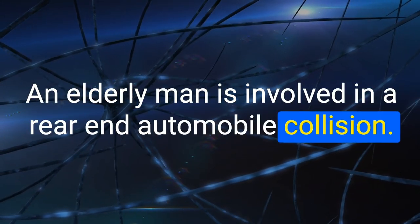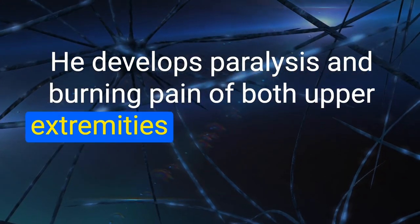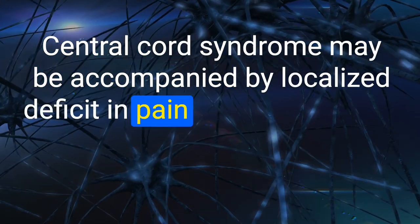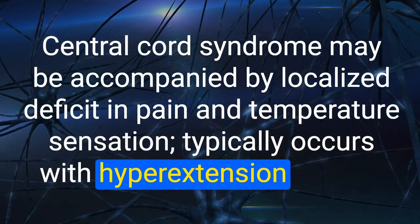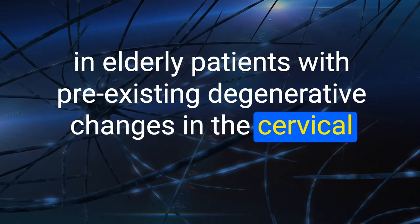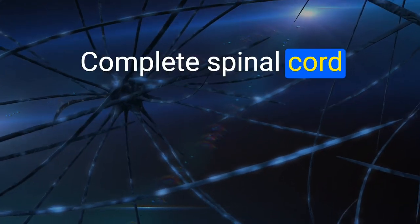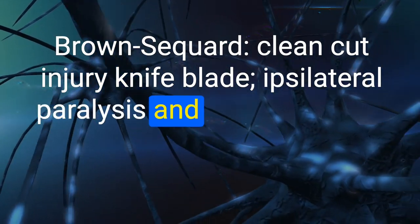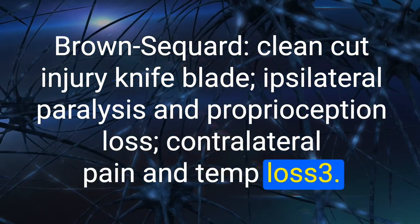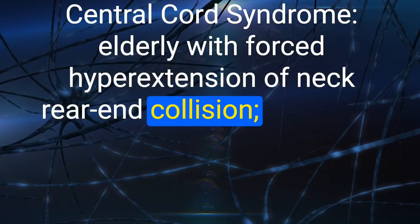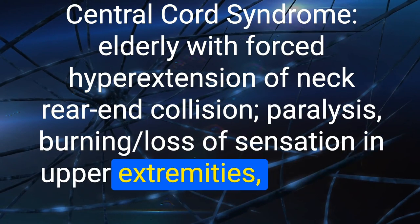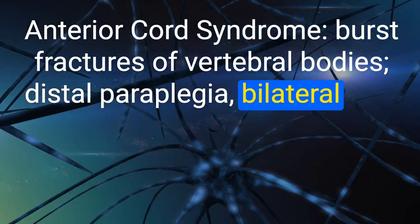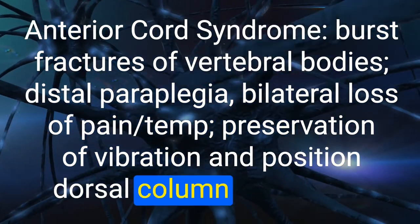23. An elderly man in a rear-end collision develops paralysis and burning pain of both upper extremities while maintaining good motor function in his legs. Most likely diagnosis: central cord syndrome. Spinal cord injury types: (1) Complete — total motor and sensory loss below the lesion. (2) Brown-Séquard — ipsilateral paralysis/proprioception loss, contralateral pain/temp loss. (3) Central cord — elderly, forced hyperextension, upper extremity paralysis/burning. (4) Anterior cord — burst fractures, paraplegia, bilateral loss of pain/temp, dorsal column spared.